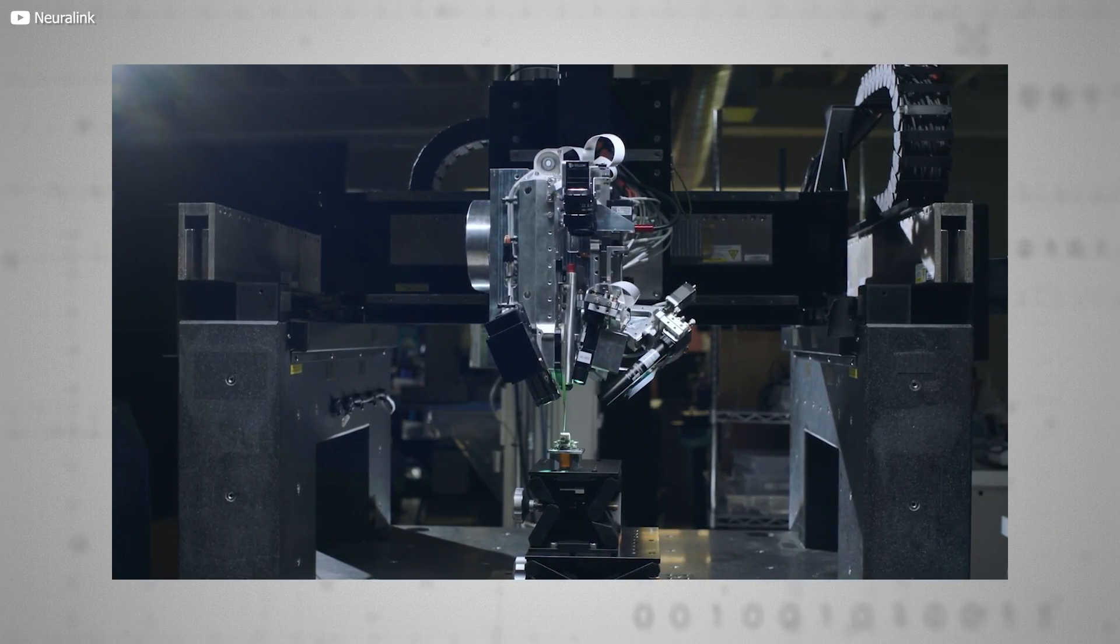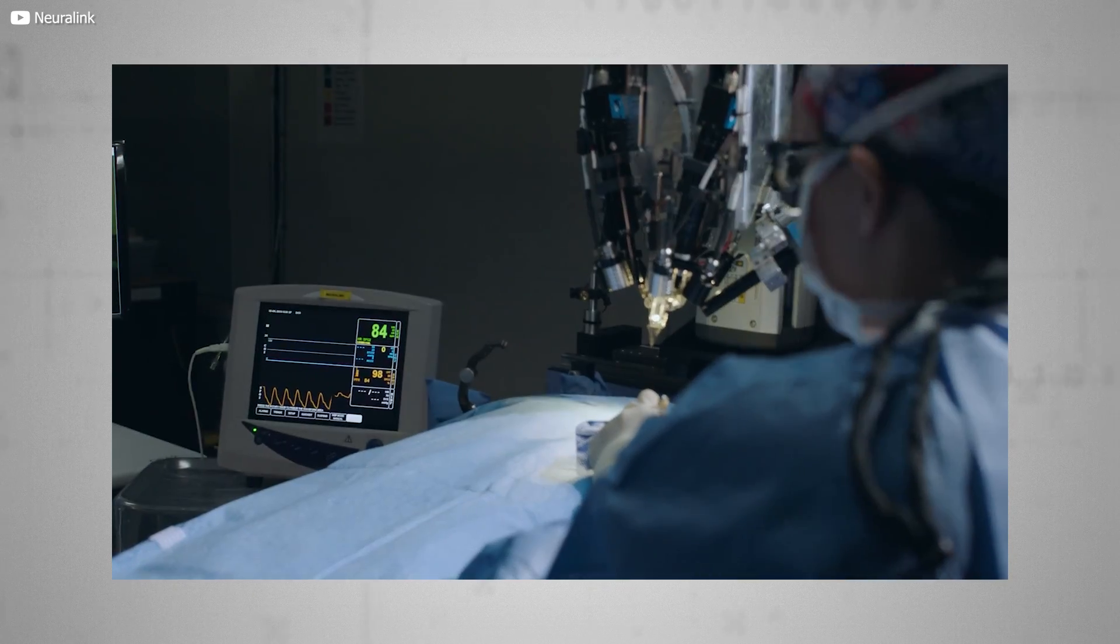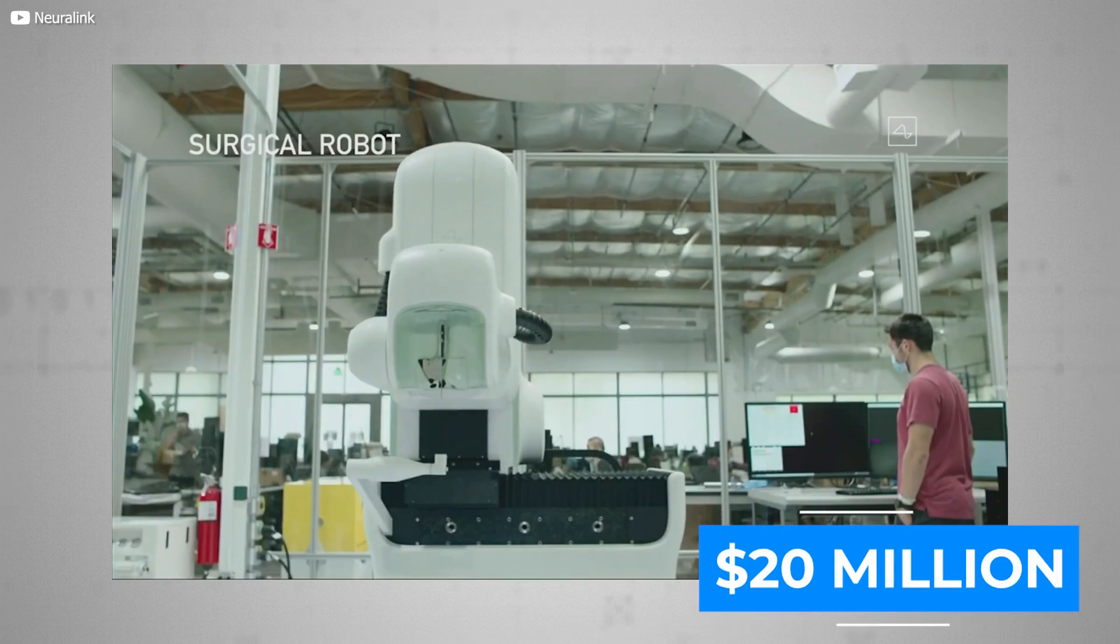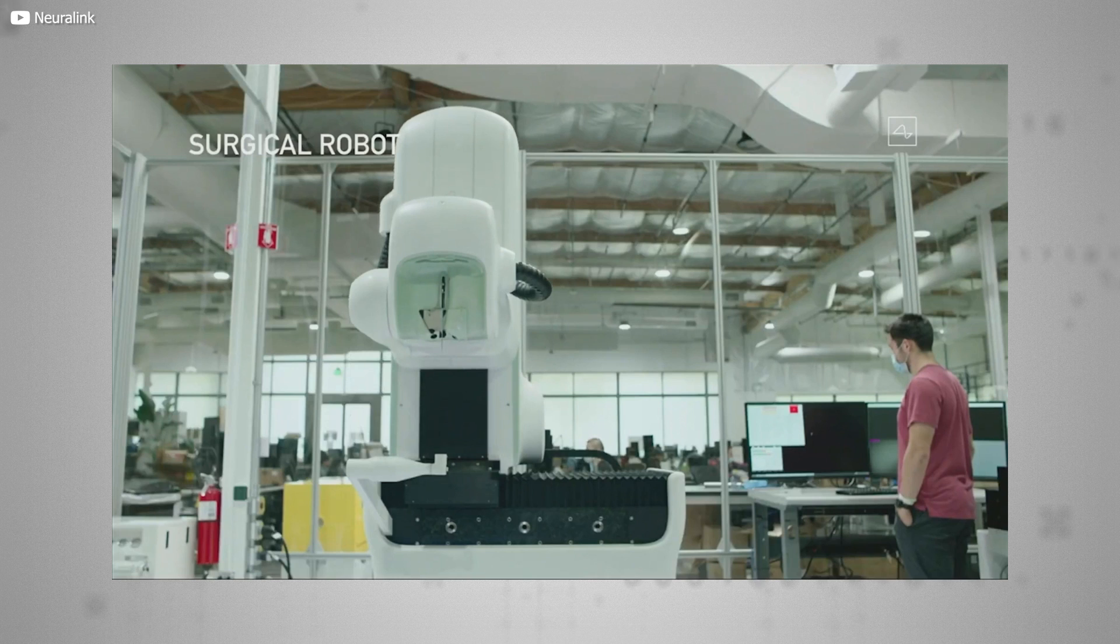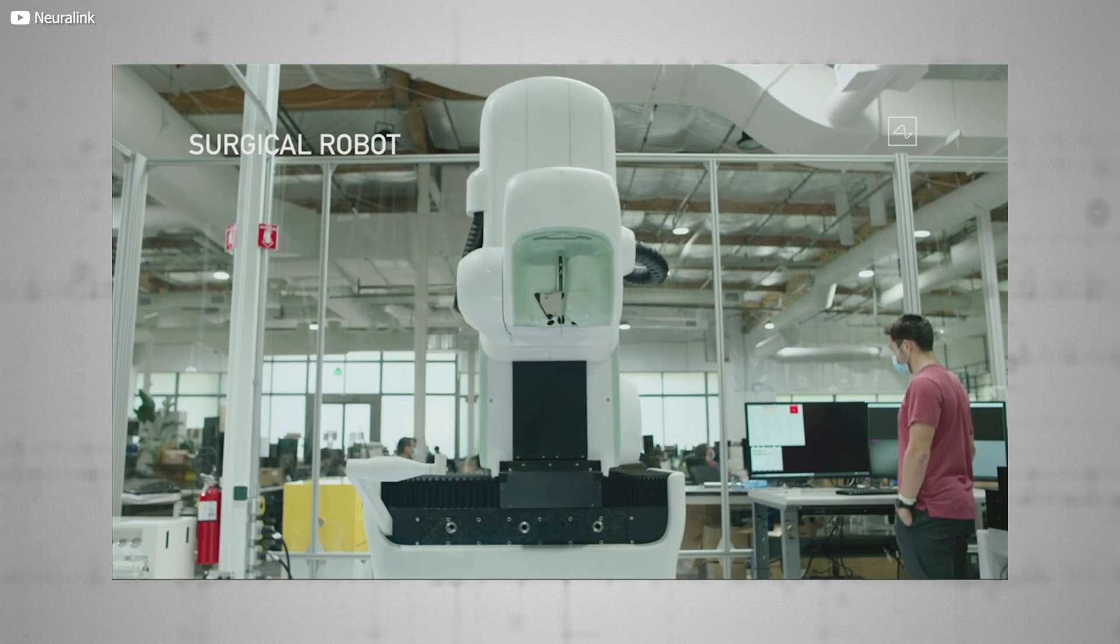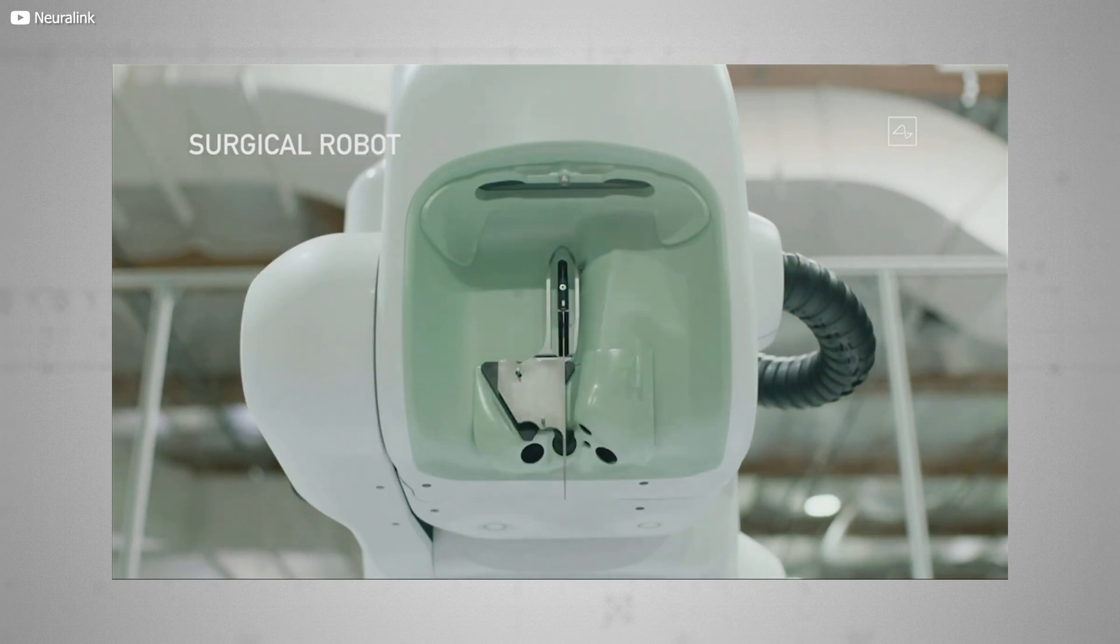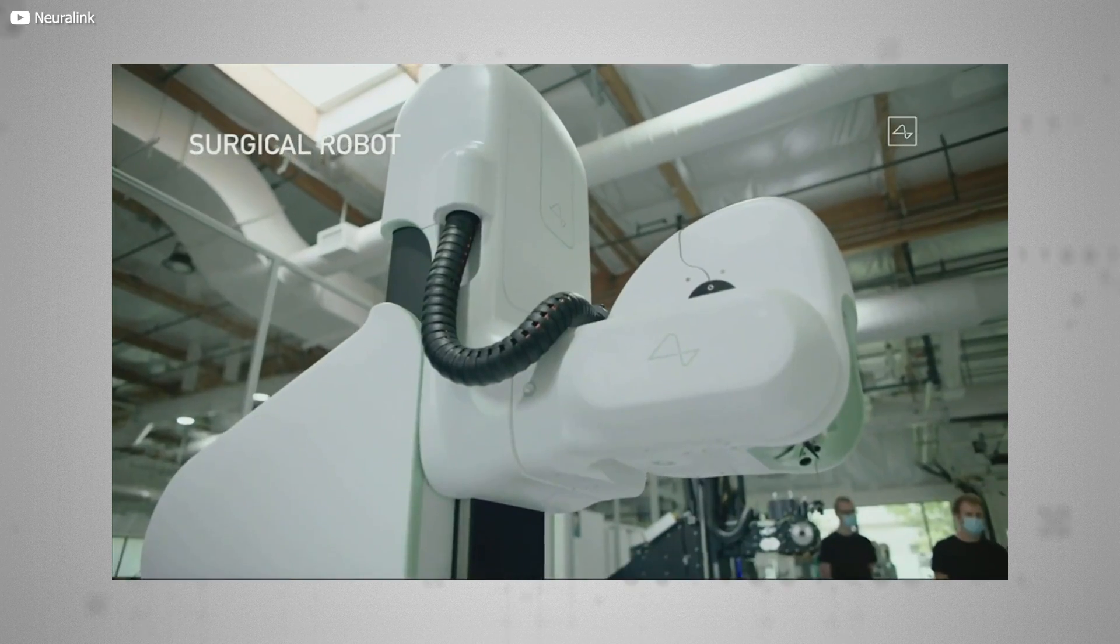Those minuscule filaments we mentioned earlier are much too fiddly for a regular human doctor to be trusted with. So Neuralink has developed a $20 million robotic neurosurgeon to install those impossibly tiny filaments into your noggin in a manner described as akin to that of a sewing machine. Naturally, it's important the robot surgeon manages this without damaging anything important or causing unnecessary blood loss.